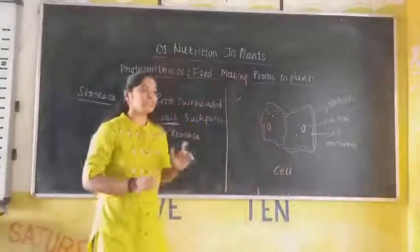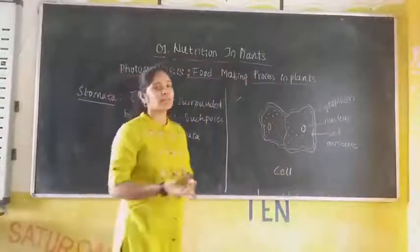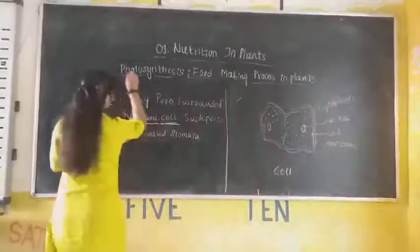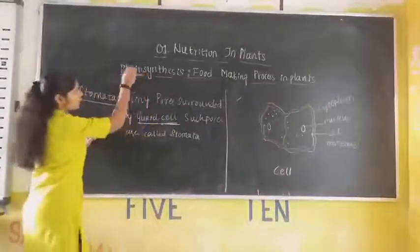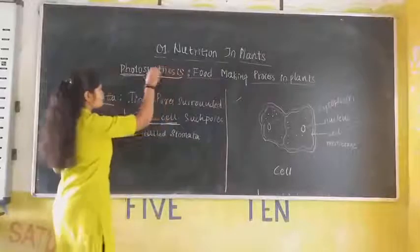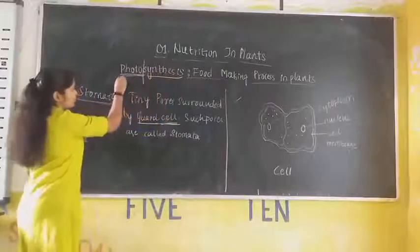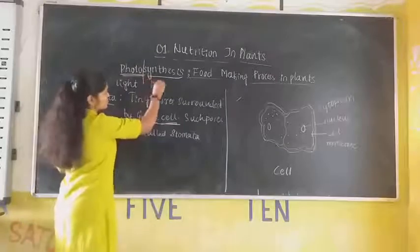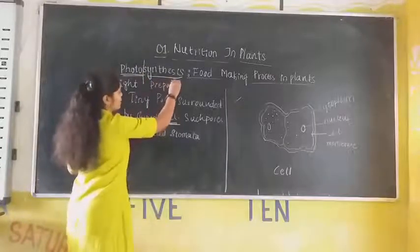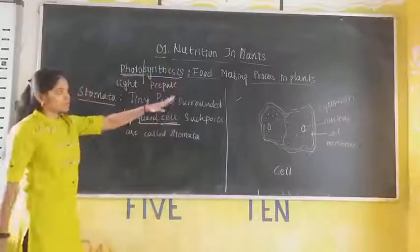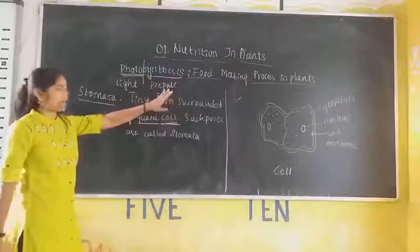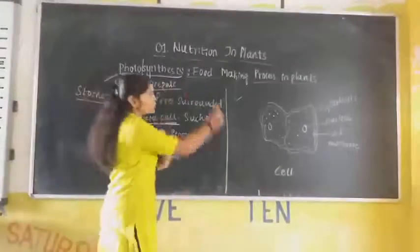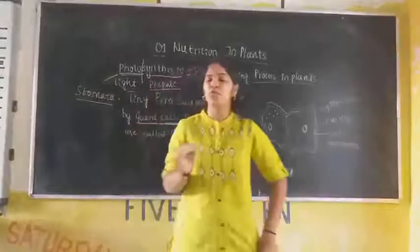What is photosynthesis? Two words are mixed here: one is 'photo' and another one is 'synthesis.' Photo means light. Synthesis means preparation. The food is prepared in plants in the presence of light, and that process is called photosynthesis.